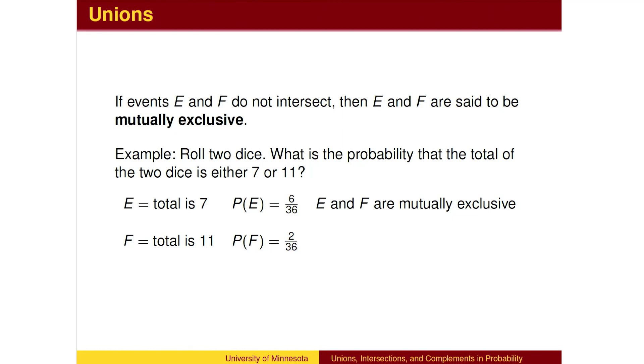For example, when rolling two dice, you can't get both a total of 7 and a total of 11 at the same time. You can get one or the other, but not both. To get the total probability, we find the probabilities of the individual events separately, then add them together.